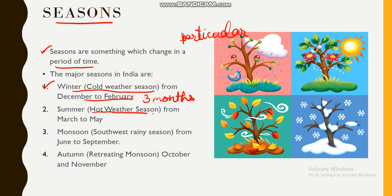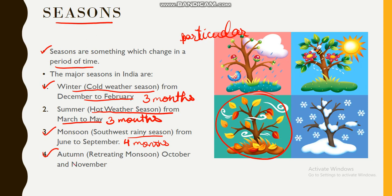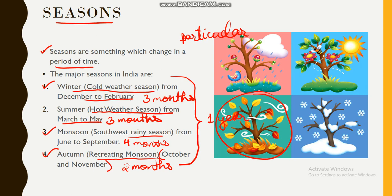Next comes monsoon, the most favourite season. It's the southwest rainy season, lasting 4 months. Then comes autumn, where you see leaves flying all over. Autumn is known as the retreating monsoon, from October to November — which is 2 months. So altogether, these seasons make up one full year.